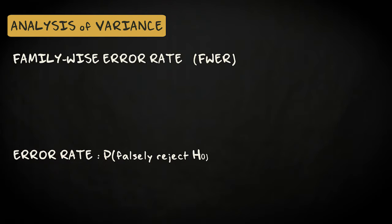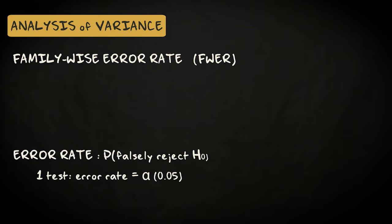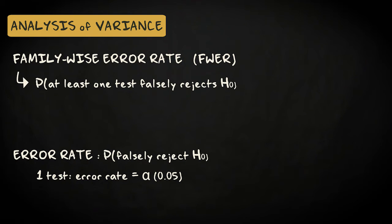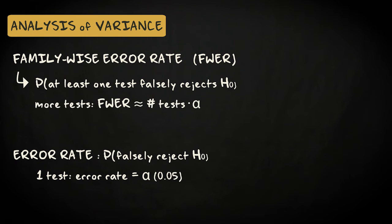The error rate is the probability of falsely rejecting the null hypothesis and falsely concluding there is a significant effect when the null is in fact true. If we perform one test, the error rate is equivalent to the significance level, which we determine ourselves and normally set at five percent. When we perform more than one test, the family-wise error rate refers to the probability of at least one of these tests resulting in a false rejection of the null hypothesis. This probability is approximately equal to the number of tests times the significance level.